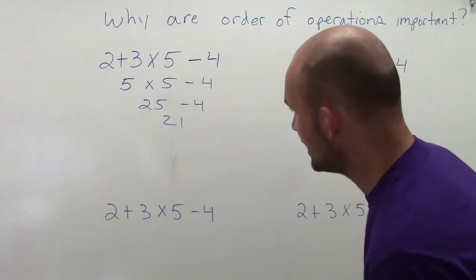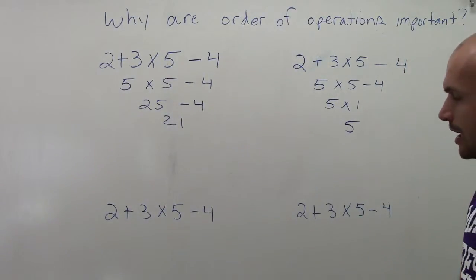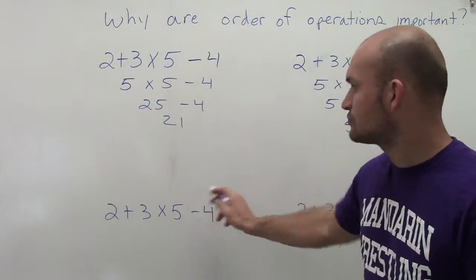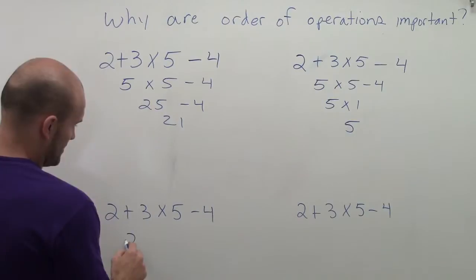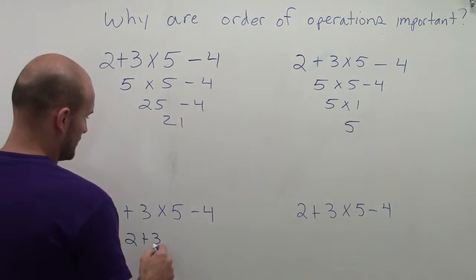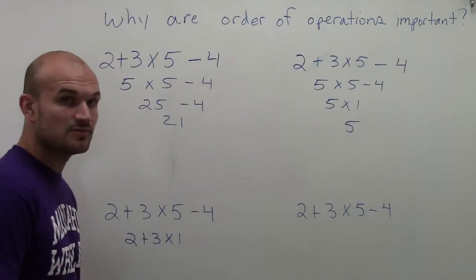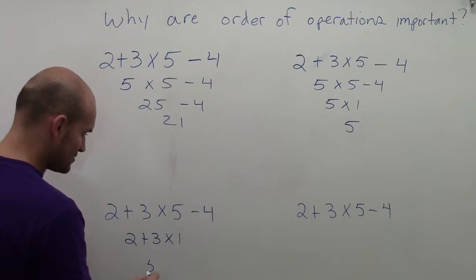Then let's look at the next student. That maybe this student wants to even do something different. They maybe want to subtract first. Well, yeah, let's do that one. So 2 plus 3 times 1. So they do the 5 minus 4 to give us 1. Then they maybe want to add next. So they have 5.